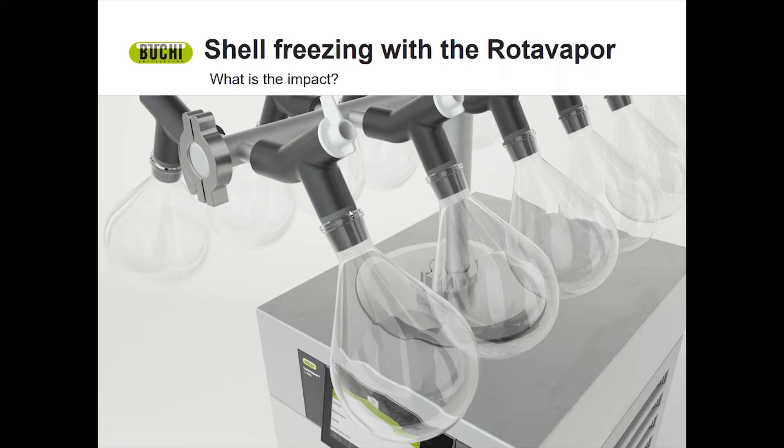We will mainly talk about samples for manifold applications, as you can see in the picture here. You have a round bottom flask or another flask where your sample is located and you would like to freeze dry that. How do you freeze or what is the best way to freeze your sample?